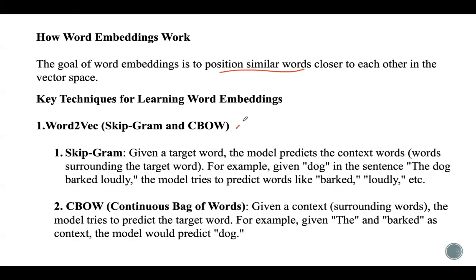Key techniques for learning word embeddings: the first one is Word2Vec, where you can use either skip-gram or CBOW models. Skip-gram means that given the target word, the model will try to predict the context words — the words surrounding the target word. For example, in the sentence 'the dog barked loudly,' if 'dog' is the target word, the model should predict neighboring words like 'barked' and 'loudly.'